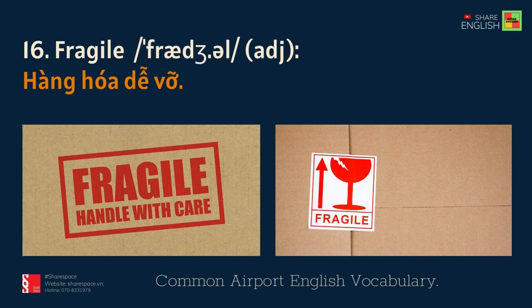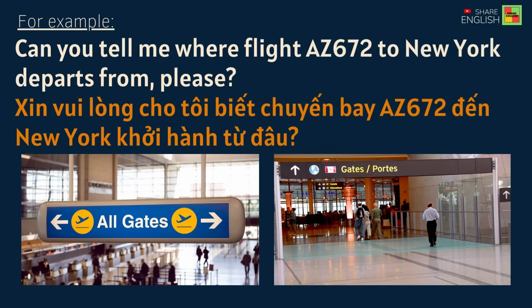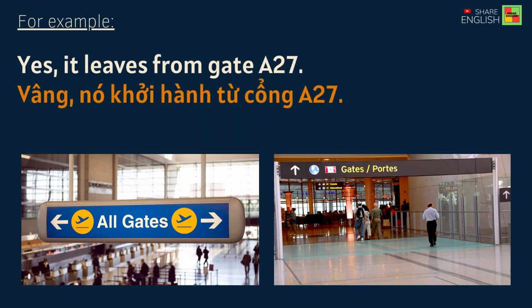16. Fragile. 17. Gate. For example: Can you tell me where flight AZ672 to New York departs from, please? Yes, it leaves from Gate A27.